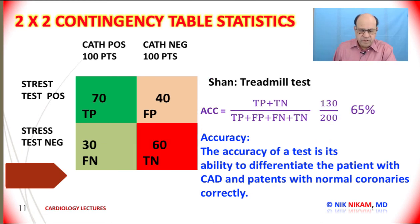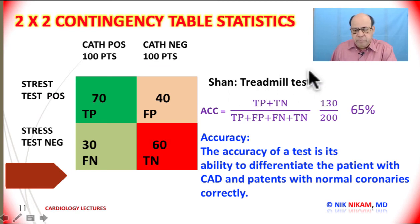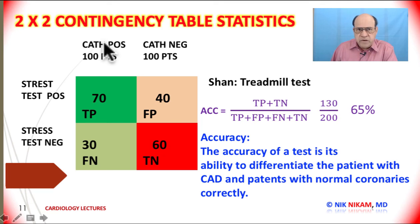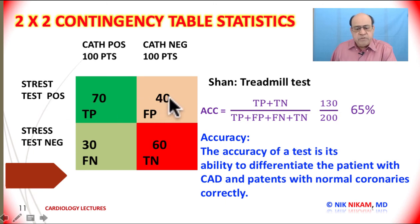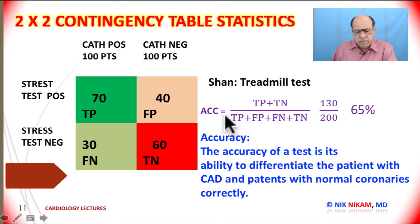Sean, who had recommended a nuclear stress test, was assigned to research the plain regular treadmill test. Among 100 patients with documented coronary artery disease on cardiac cath, the regular treadmill test was positive in only 70 of them, and negative in 30 despite documented coronary artery disease. Among those with normal coronary arteries, the stress test was positive in 40 patients and negative in only 60. The overall accuracy of a plain treadmill test in identifying patients with or without coronary artery disease is only 65 percent, and its sensitivity is only 70 percent.